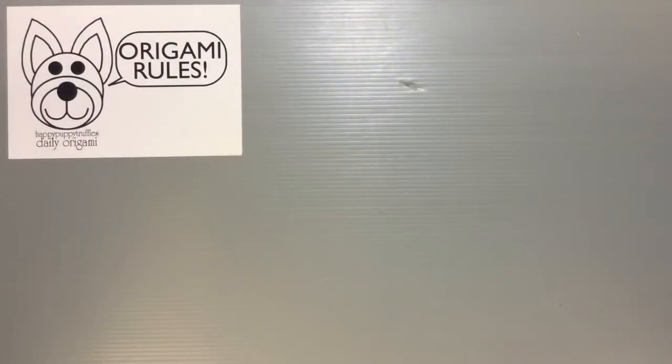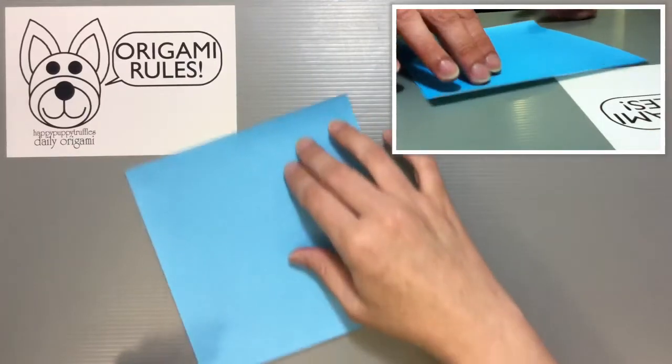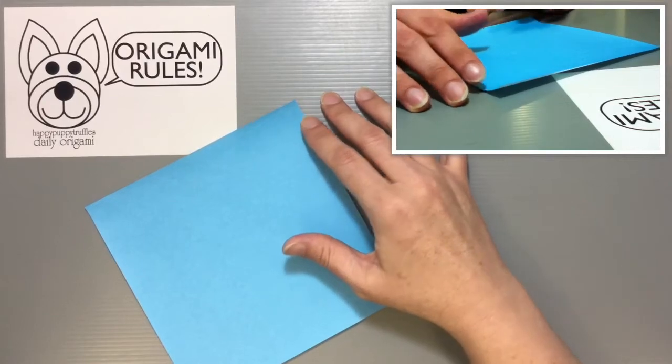Hi everyone, my name is Heather and I'm the person behind Happy Puppy Truffles. Today I wanted to share with you another traditional origami. Today we're going to make a traditional origami palanquin. For this origami you just need one piece of origami paper. I'm using a piece of paper that's 15 by 15 centimeters.